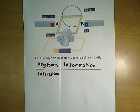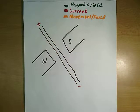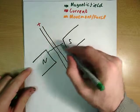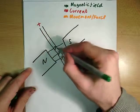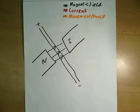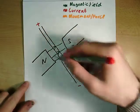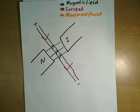You can think about the jumping wire and why this moves. First thing we know about, we've got a magnetic field going from north to south across the permanent magnet. And we also know we've got a current running through this wire from positive to negative.